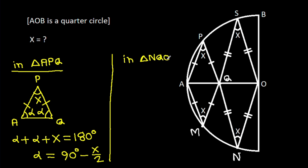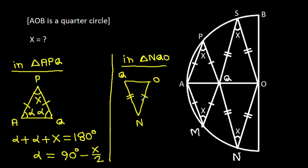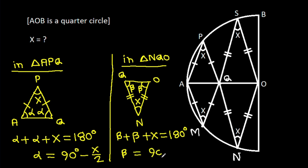So alpha is N. QO, NQ is equal to NO. That means these two angles will be equal — suppose beta — and this angle is X. So beta plus beta plus X equals 180 degrees. So beta equals 90 degrees minus X over 2.